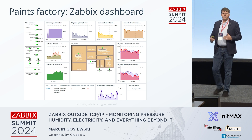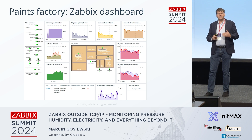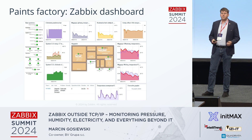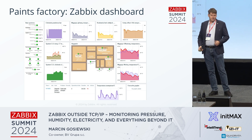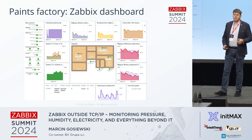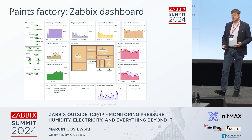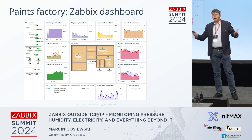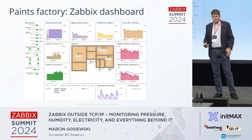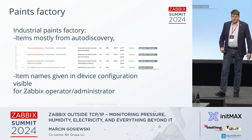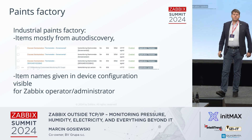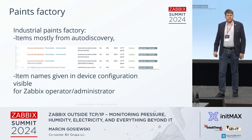All people can see the correlation between, say, low temperature outside, plus low pressure in the heating system, plus temperature in the heating system — should the alarm raise or not. Items come from auto-discovery. Everything very simple.